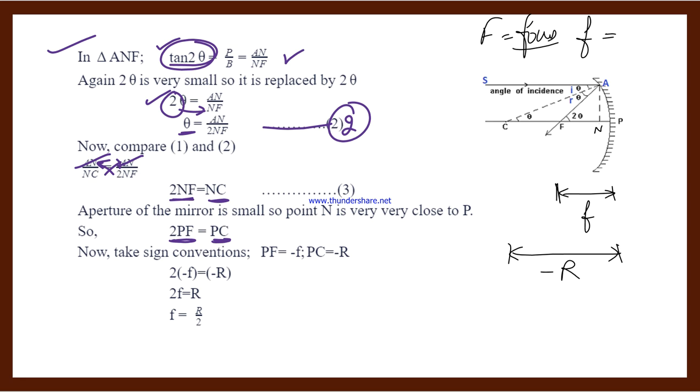Now we know that for a concave mirror, both are always negative. We put the sign convention. So this is minus f and this is minus R. Substituting here, 2 times minus f equals minus R. Minus and minus cancel, so 2f equals R. Therefore f equals R divided by 2. This is the final answer. This derivation is not very important.